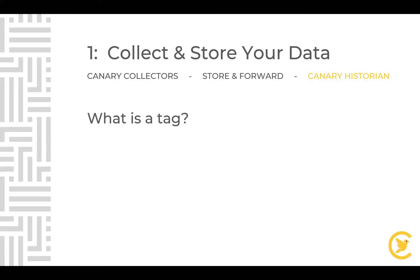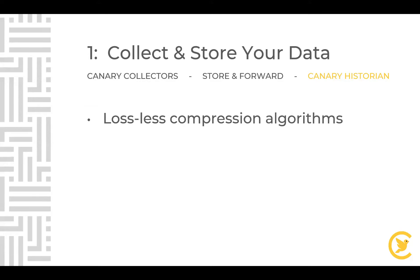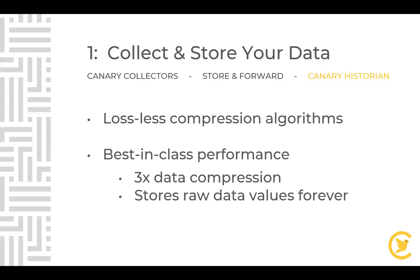A tag is a single stream of time-series data, also referred to as points, channels, or items. A tag consists of TVQ — timestamp, value, quality — and also metadata properties like engineering units, high-low set points, and GPS coordinates, which are all fully customizable. Once data is written to the Historian, Canary compresses it using a unique lossless compression algorithm with best-in-class performance — three times data compression. Because it's lossless, we are never interpolating data or cutting data values; the unique raw values are stored every time.